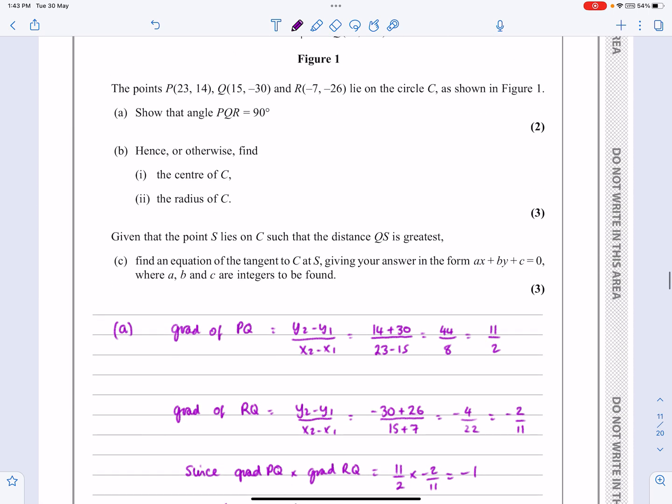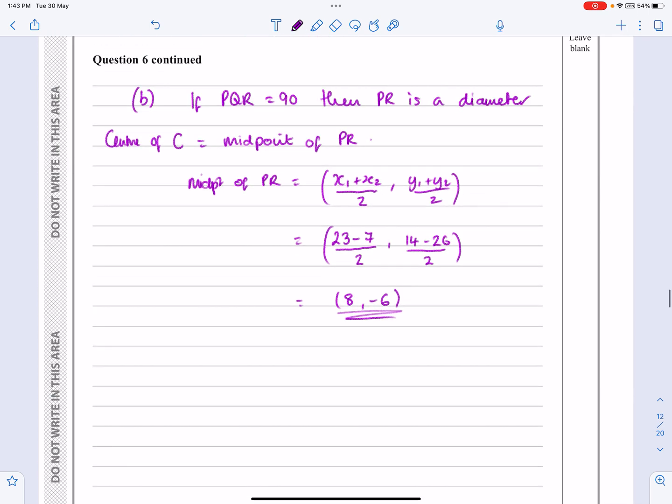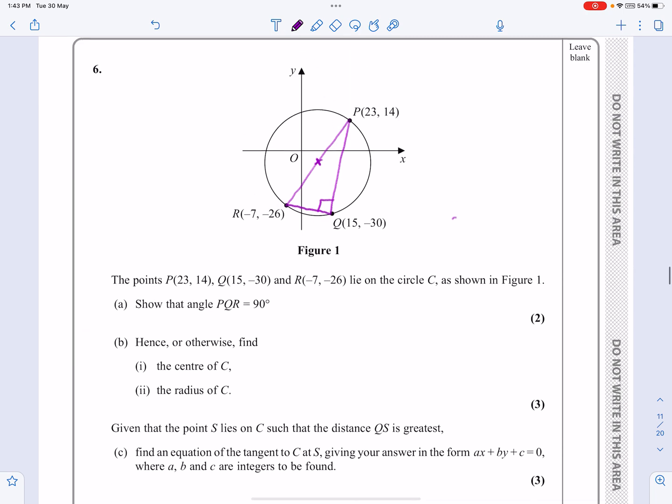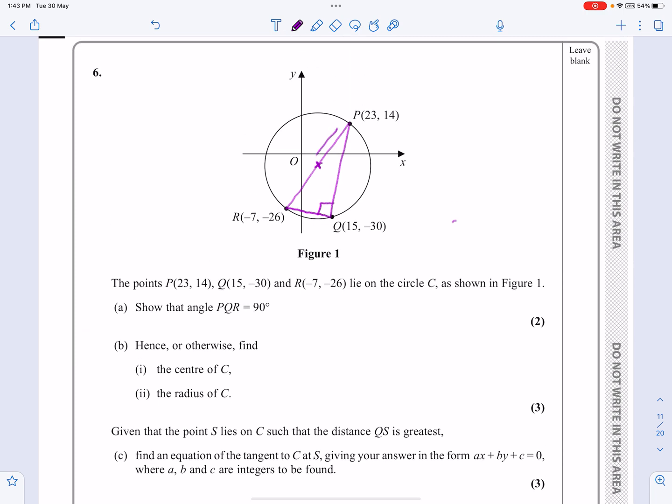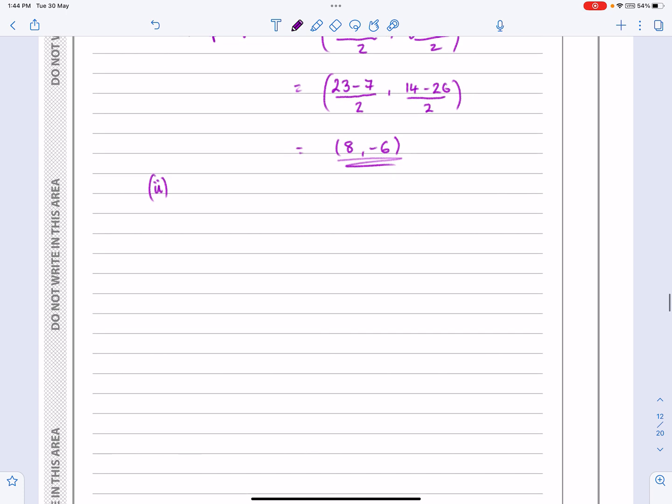What's the other thing we've got to do? Find the radius of C, so this was B part 1, now I want B part 2. Let's just go back to the diagram again. So the radius is just half of the length of PR, isn't it? That's going to be the radius. So again, let's just say that to the examiner. So radius will equal half the length of PR.